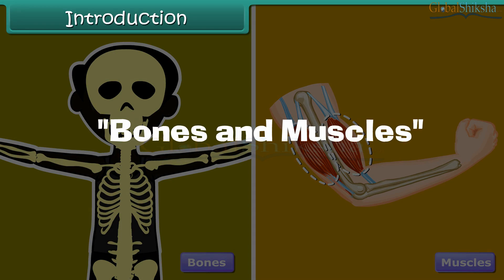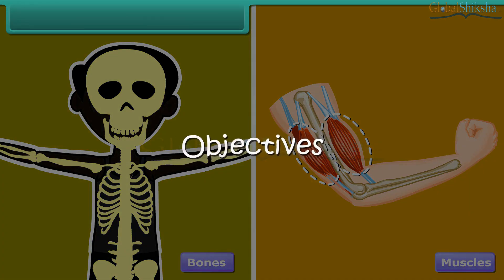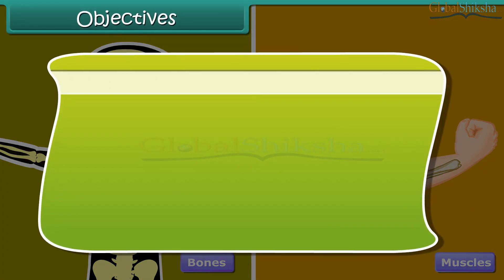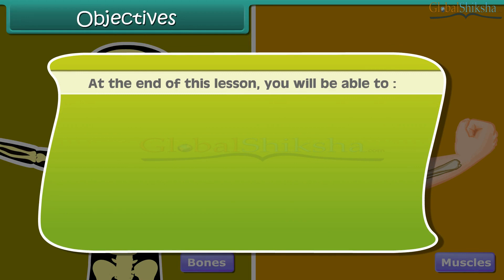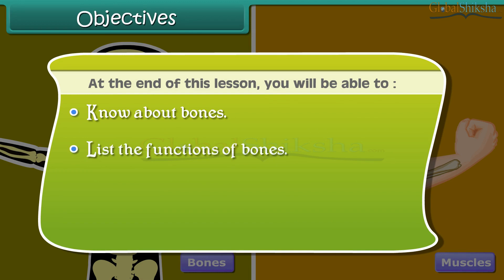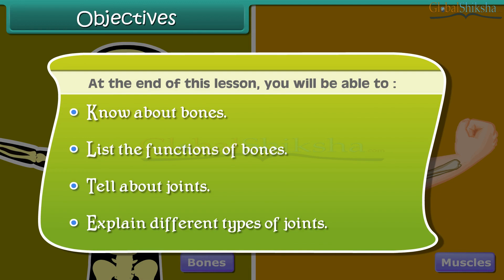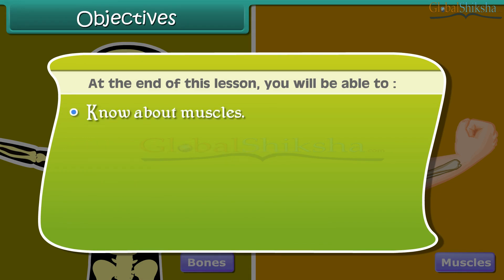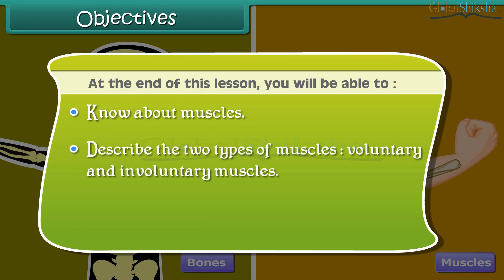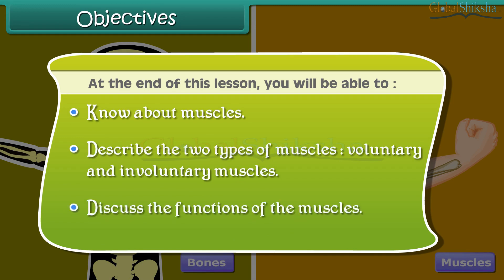Bones and muscles. Objectives. At the end of this lesson, you will be able to: know about bones, list the functions of bones, tell about joints, explain different types of joints, know about muscles, describe the two types of muscles — voluntary and involuntary muscles — and discuss the functions of the muscles.